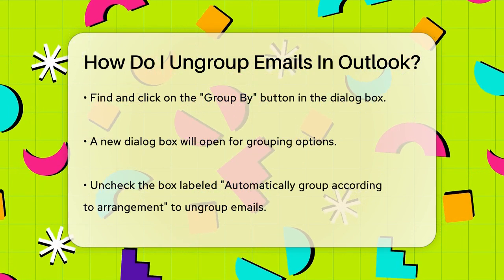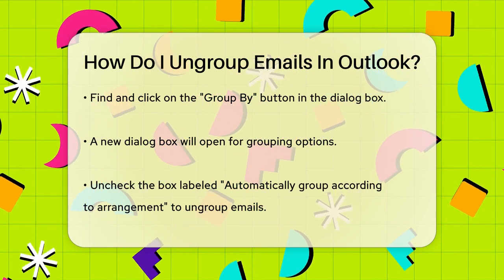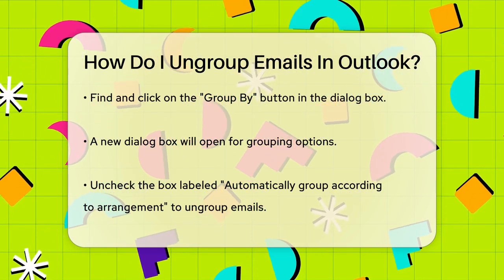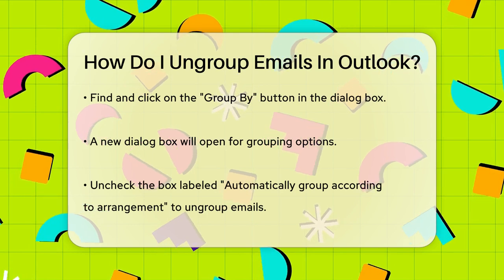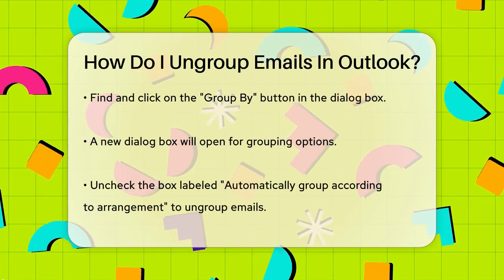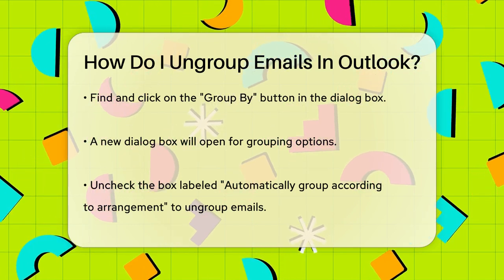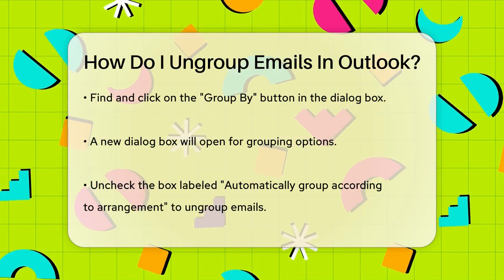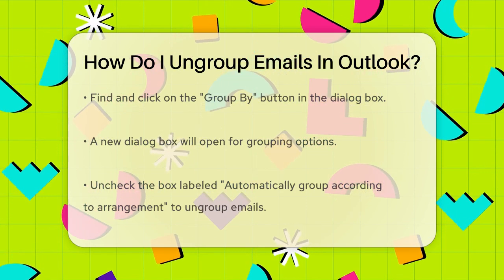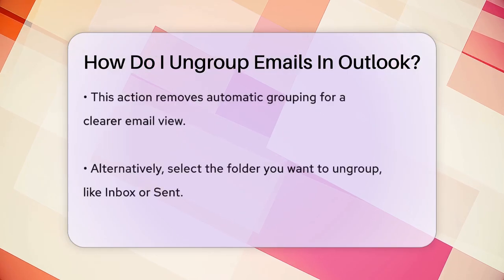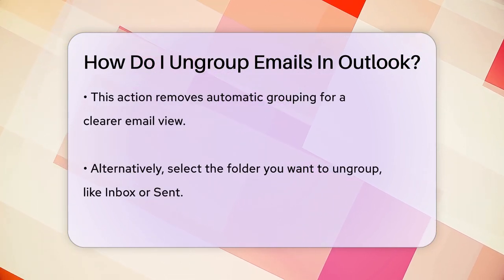In this new dialog box, you'll see a checkbox that says Automatically Group According to Arrangement. To ungroup your emails, simply uncheck this box. This action will remove any automatic grouping, giving you a clearer view of your emails.